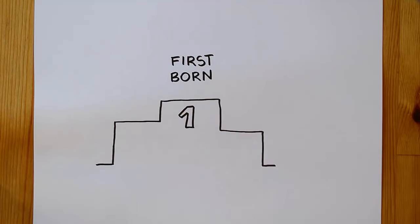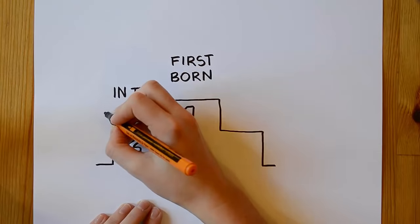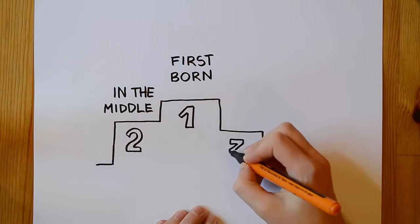Let's assume that there are three children in the family: the first born, the middle born, and the last born.